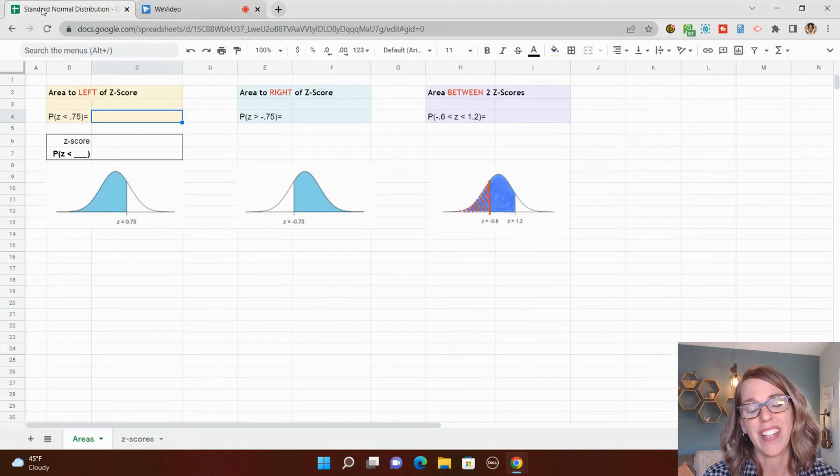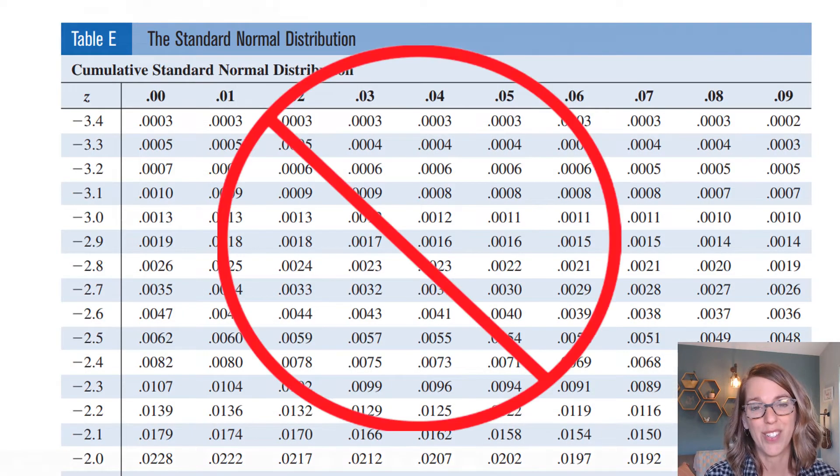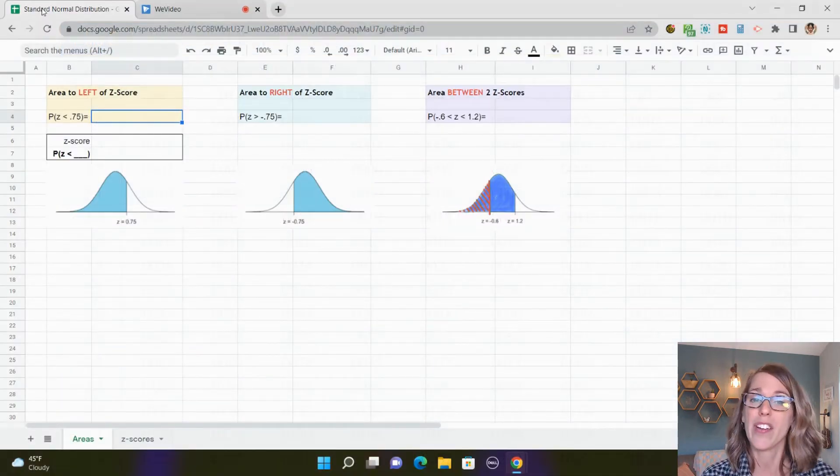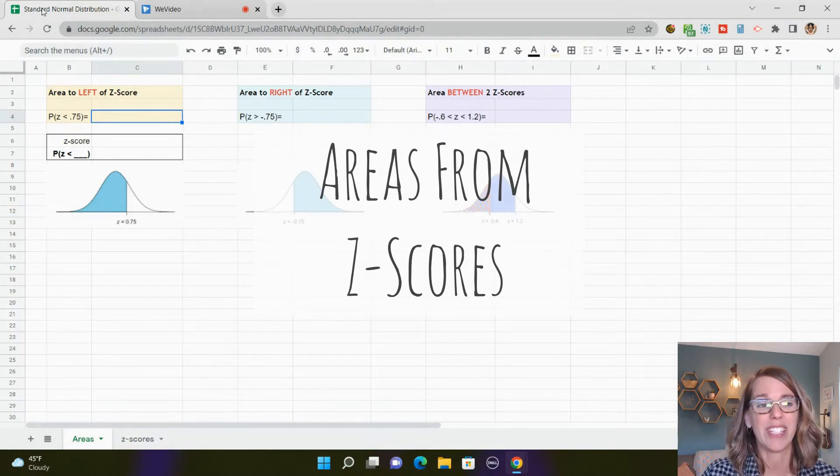It is really easy to find both areas and z-scores for the normal curve using Excel or Google Sheets - you do not need to use a table. I'm going to start with areas first, and then we're going to move on to finding z-scores given an area under the curve.